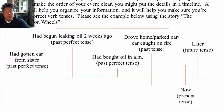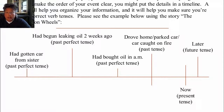When writing about things that happened before I drove home, before I parked the car, and before the car caught on fire, I'm using what's called the past perfect tense. If you remember back to maybe your LEAP classes or your English 1030 classes, they talked about tenses. The past perfect tense is a tense that uses a verb and a helping verb, or an auxiliary verb.